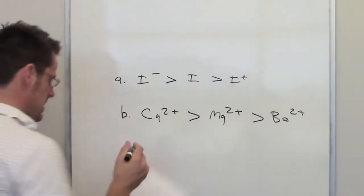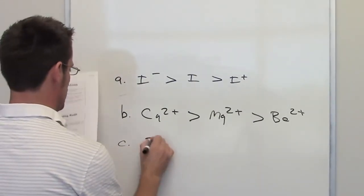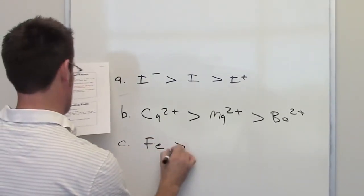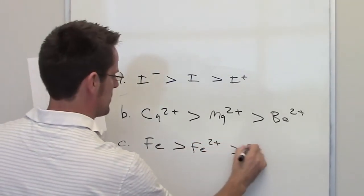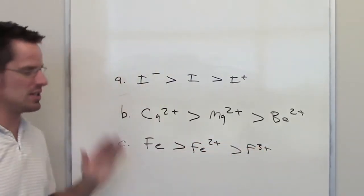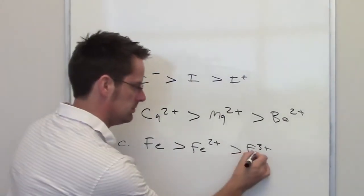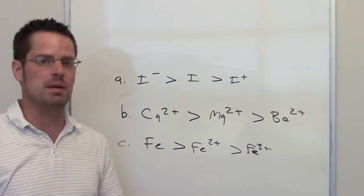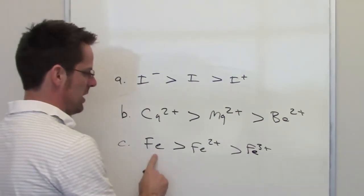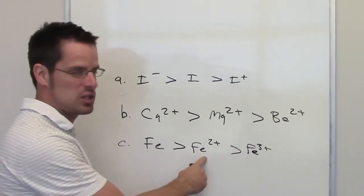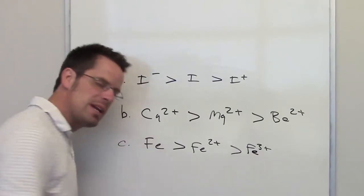In the third example, we're asked to compare different ions of iron, iron neutral to iron two plus to iron three plus. Just as we saw in example A, if you're dealing with the same element, the only thing that's happened is I've gone from iron neutral to iron that has lost two electrons to iron that has lost three electrons.